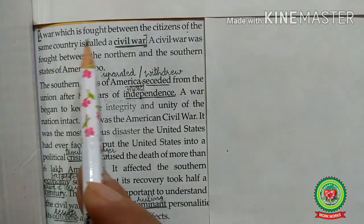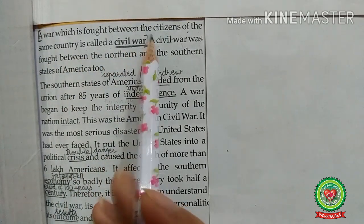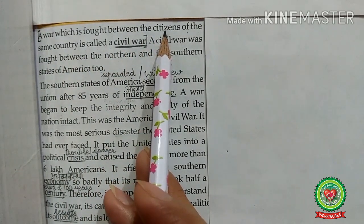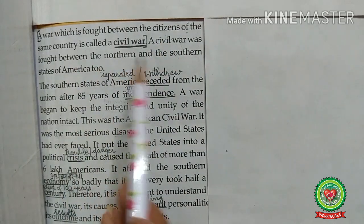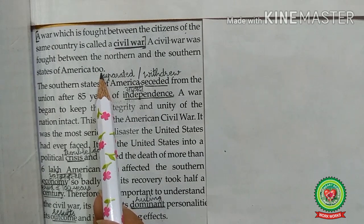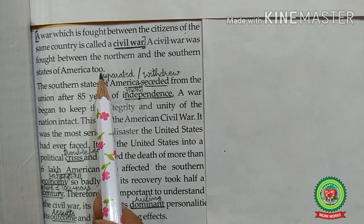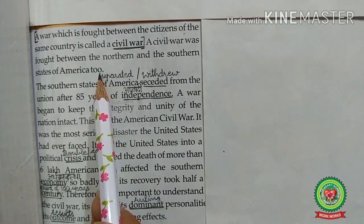A war which is fought between the citizens of the same country is called a Civil War. Citizens means persons who were born and live in a particular country. A civil war was fought between the Northern and the Southern states of America. Let us discuss what were the main reasons or causes of this American Civil War and why this war took place.